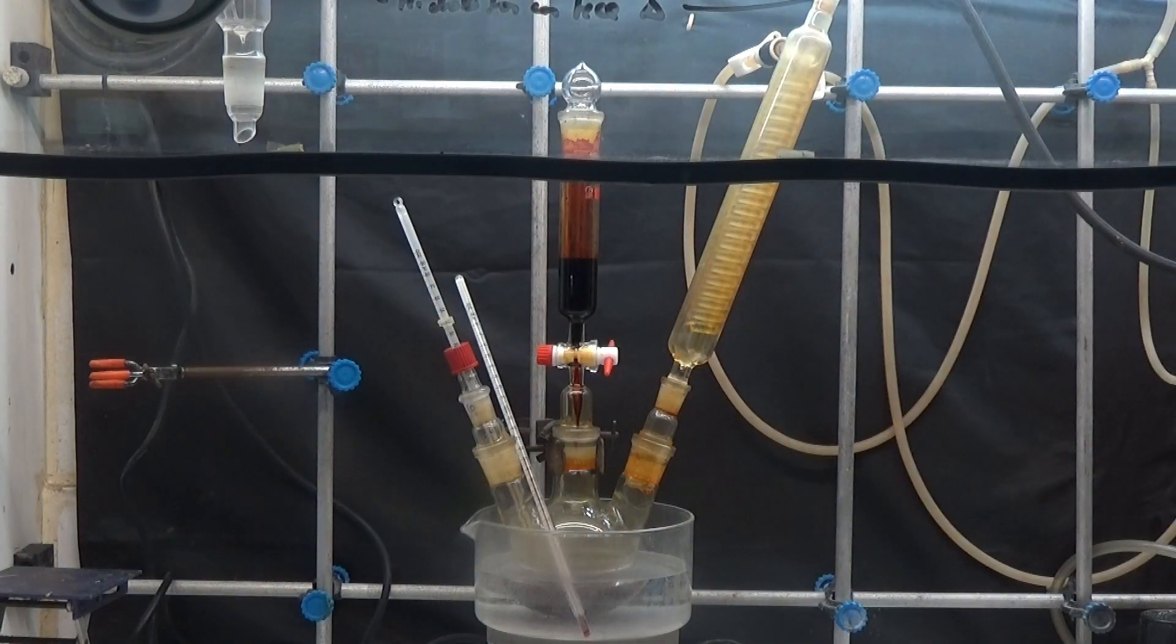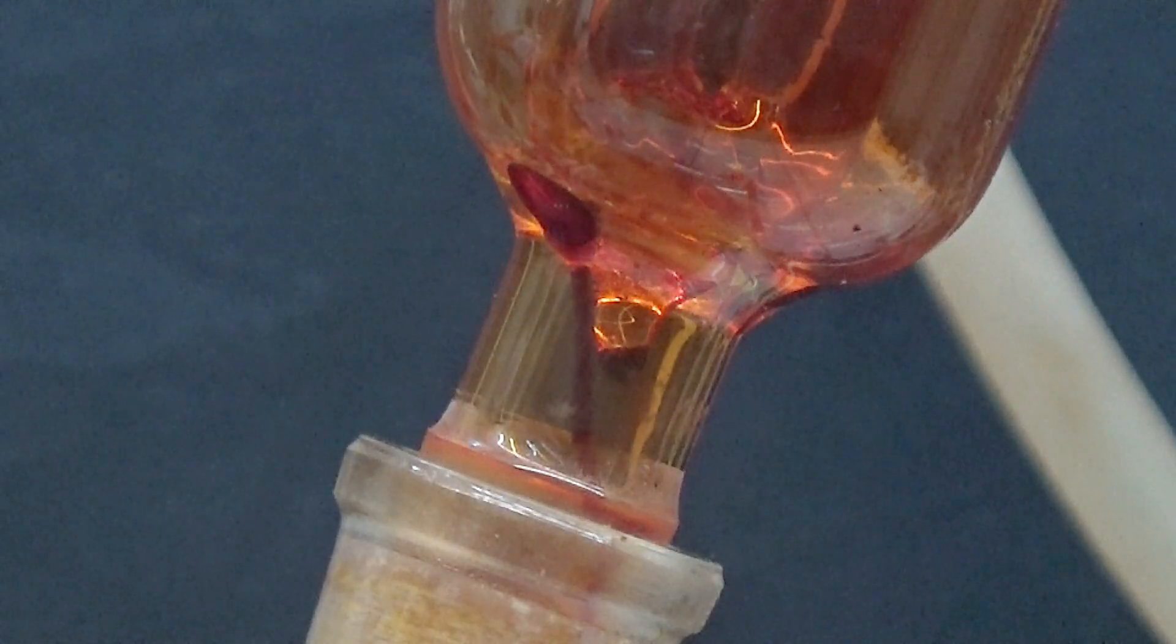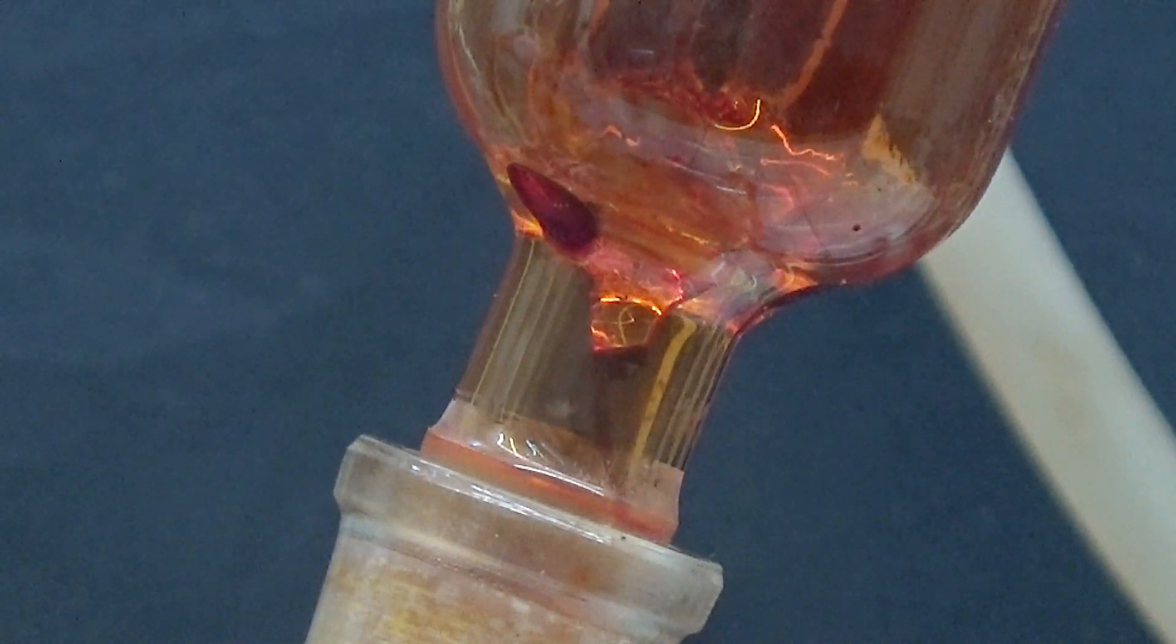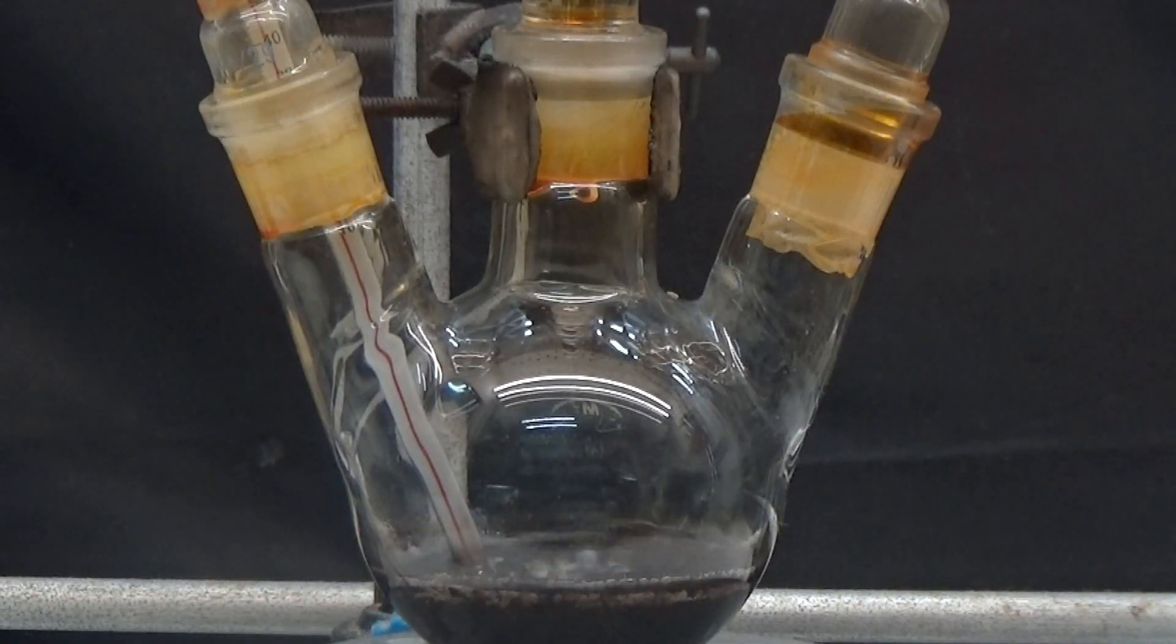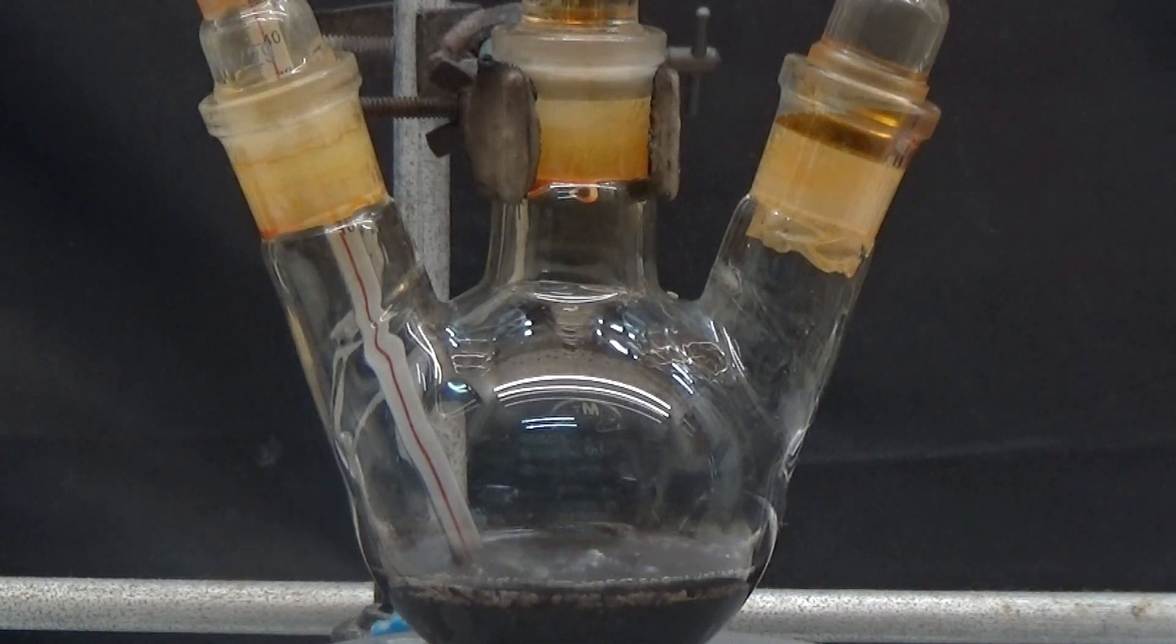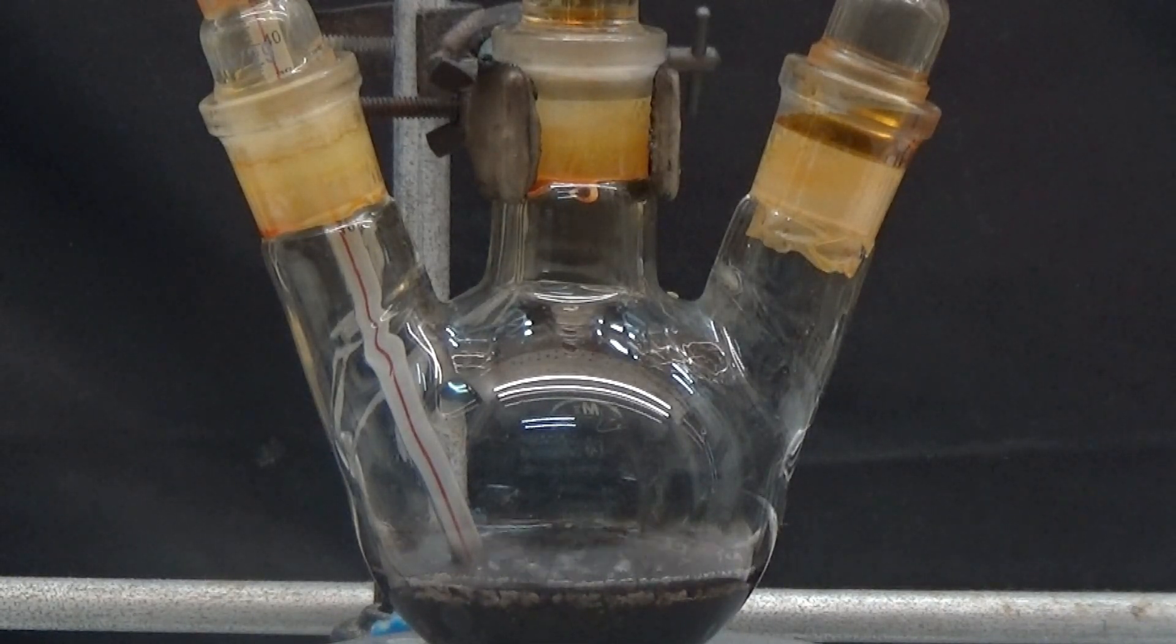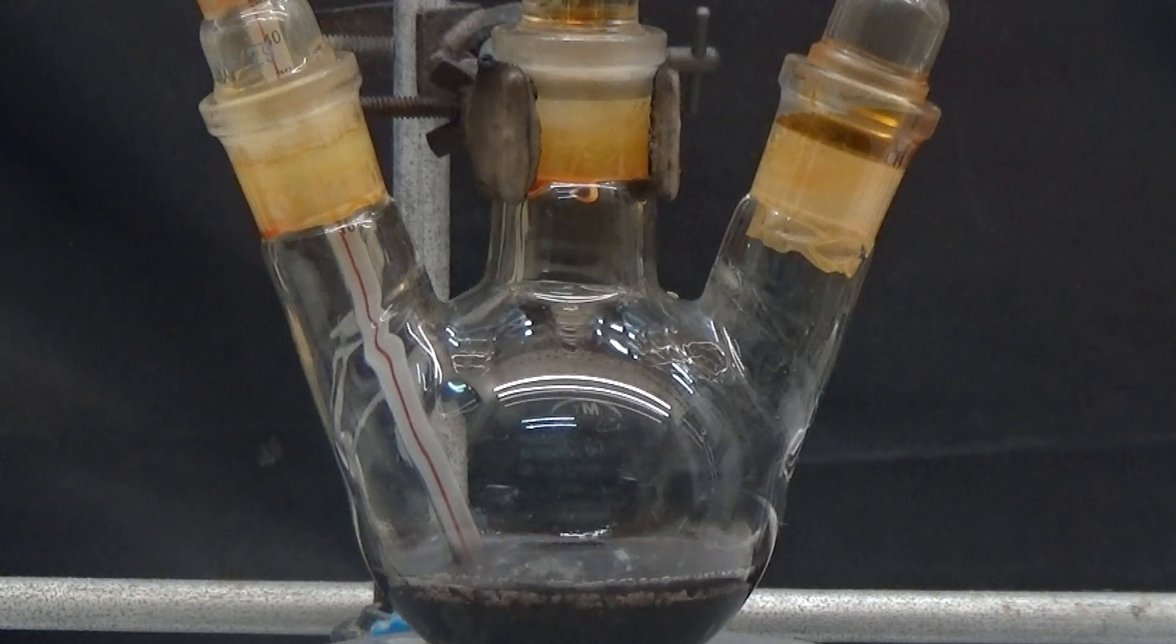Once all the bromine has been added, we heat it gently for two hours. After 30 minutes most of the bromine has disappeared, so we continue heating. After two hours of reflux, the mixture turns black.